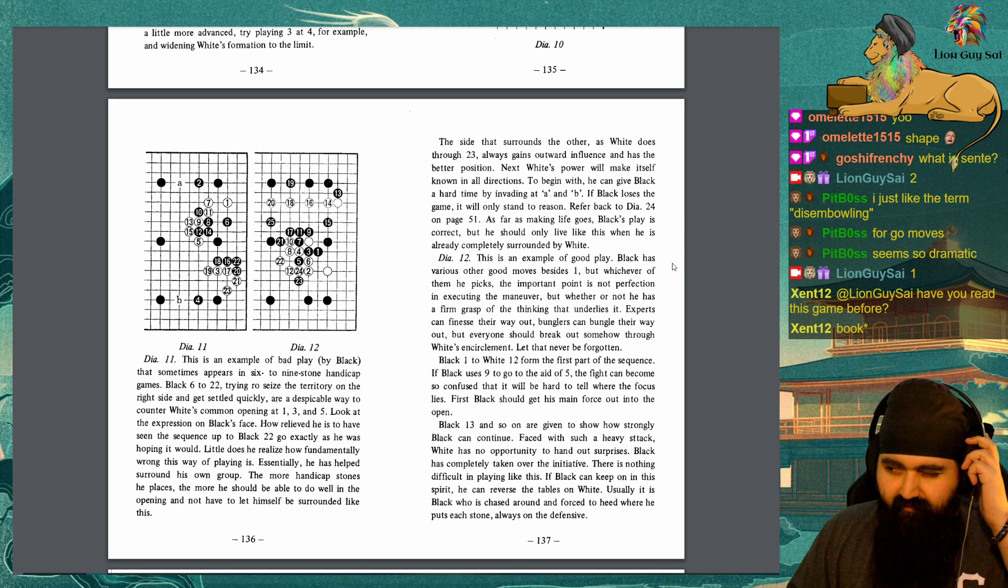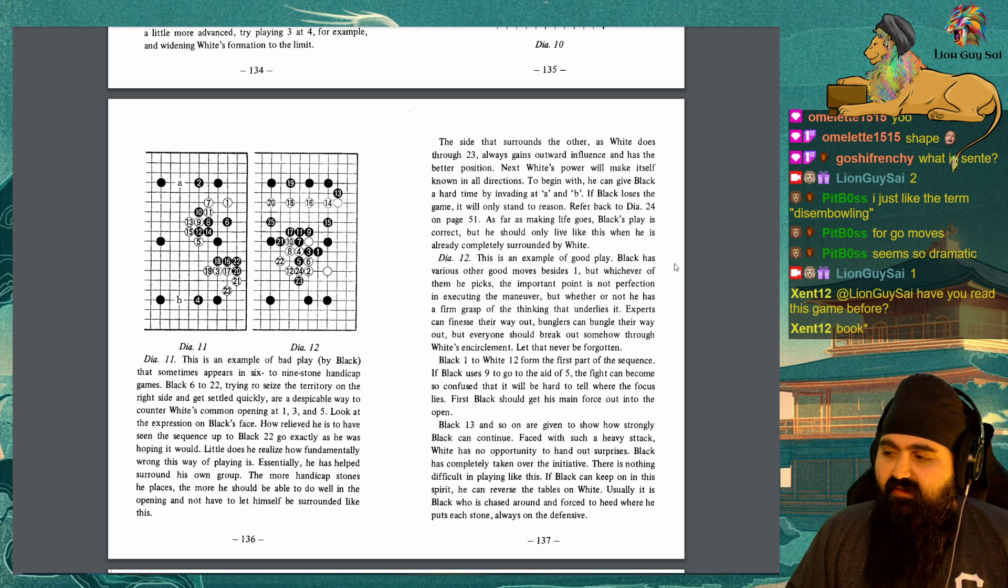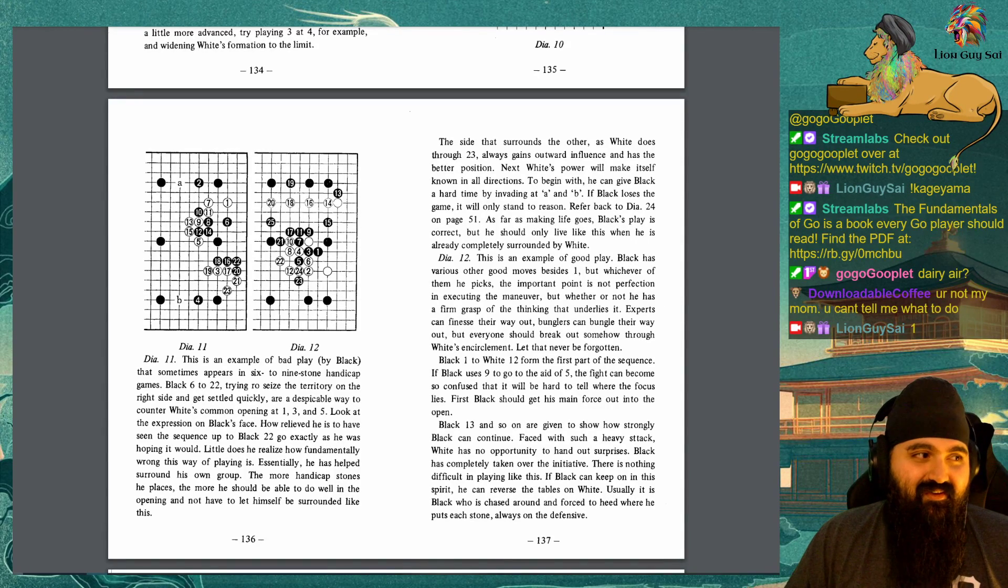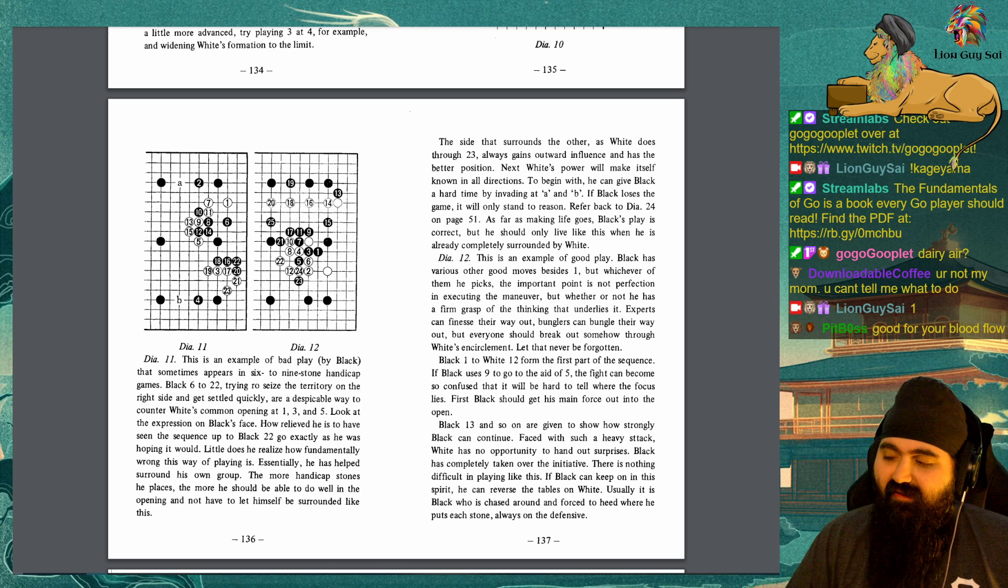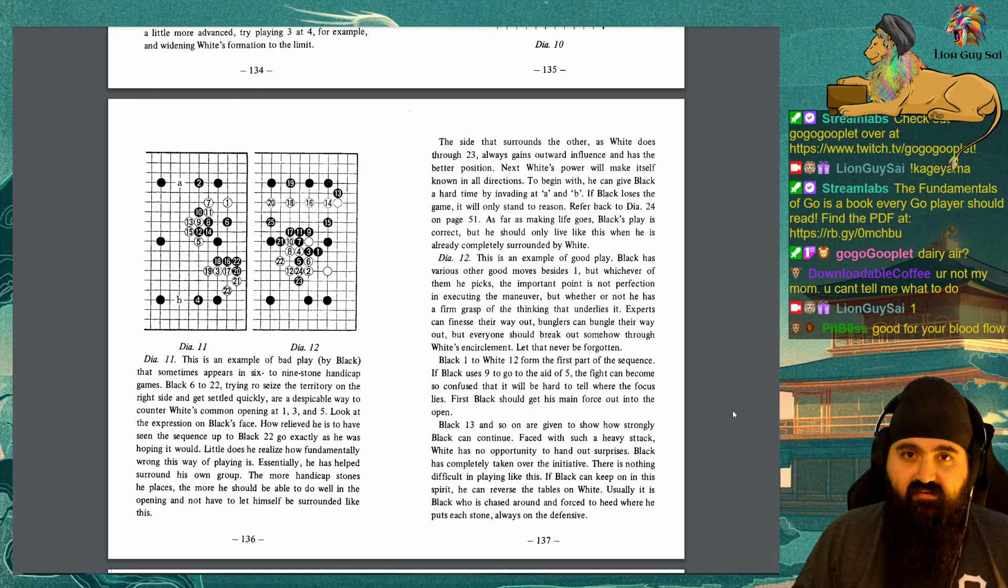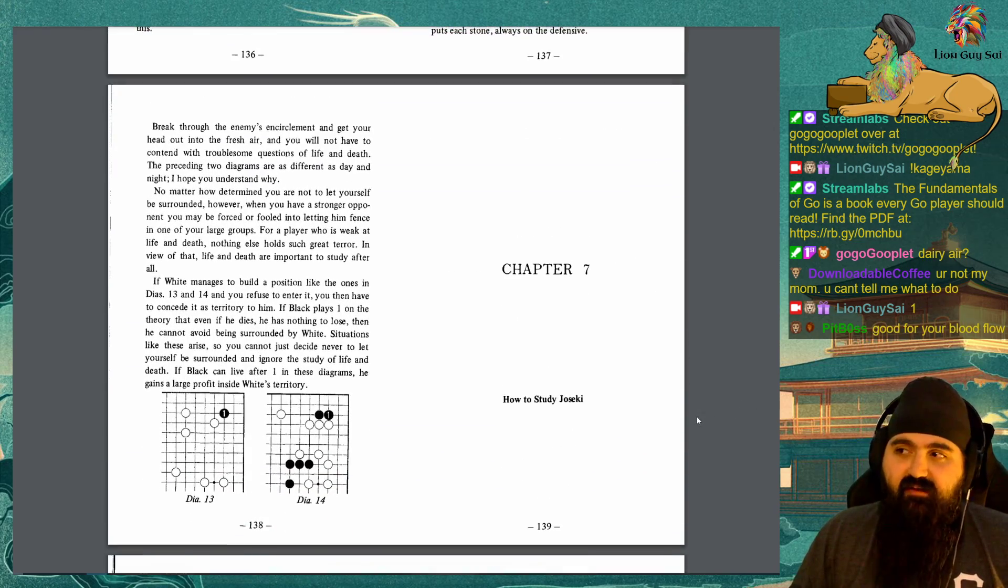Experts can finesse their way out, bunglers can bungle their way out, but everyone should break out somehow through White's encirclement. Let that never be forgotten. Black 1 to White 12 form the first part of the sequence. If Black uses 9 to go to the 8 of 5, the fight can become so confused that it will be hard to tell where the focus lies. First, Black should get his main force out into the open. Black 13 and so on are given to show how strongly Black can continue. Faced with such a heavy attack, White has no opportunity to hand out surprises. Black has completely taken over the initiative. There is nothing difficult in playing like this. If Black can keep on in this spirit, he can reverse the tables on White. Usually it is Black who is chased around and forced to heed where he puts each stone, always on the defensive.